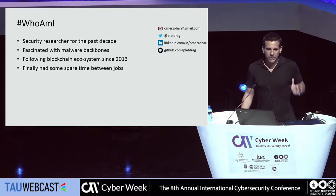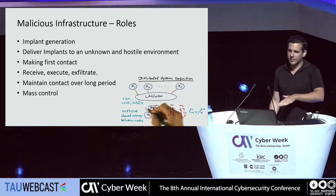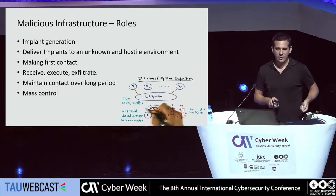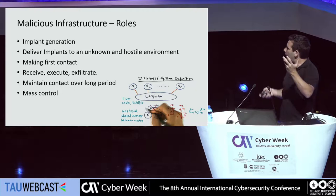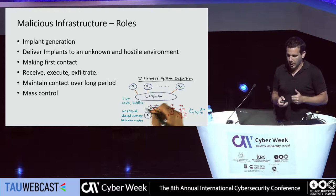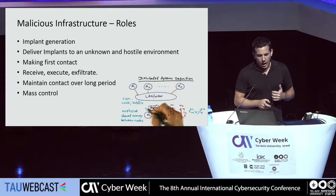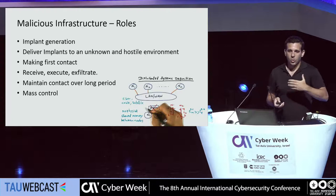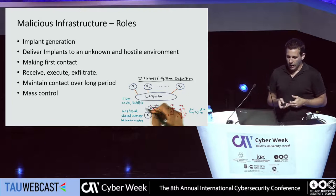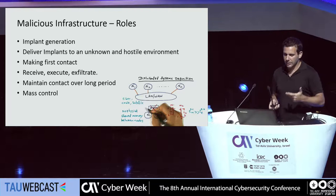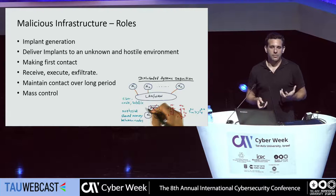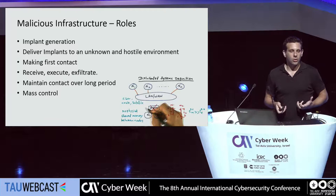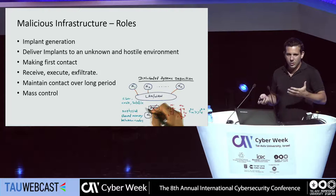Let's start by setting the baseline: what is malware infrastructure. We as researchers tend to focus on the exploitation side, the infection side, but a lot of people tend to forget that there's a whole infrastructure behind it. A malicious infrastructure is supposed to support implant generation, delivery of the implant into some hostile and unknown environment, and allow it to make first contact with its operators across very different network scenarios. It has to receive, execute, and exfiltrate whatever the malware is doing, maintain contact with its operator, and allow mass control over many bots.